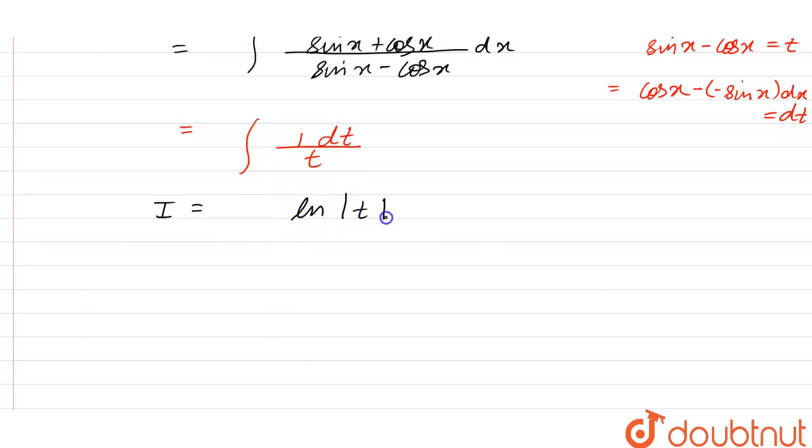So t is nothing but sin x minus cos x, so ln we have sin of x minus cos of x and we have plus c. So this will be the answer, so option d will be the right answer.